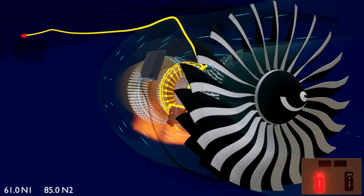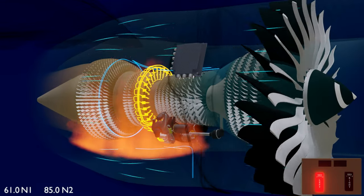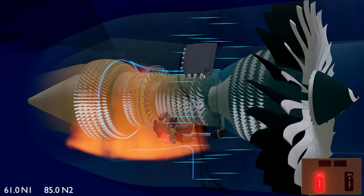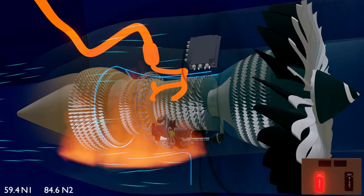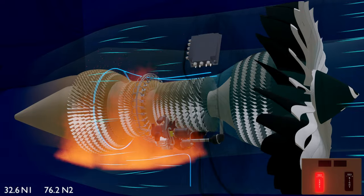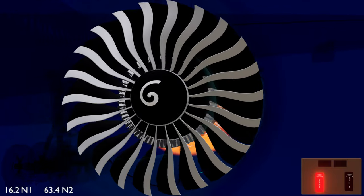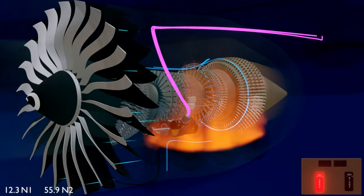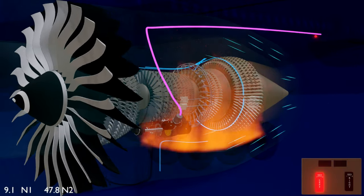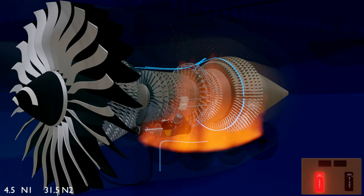Fuel supply to the engine is stopped by closing the engine spar valve and the fuel valves in the hydromechanical unit. The bleed air pressure regulating valve is closed to stop the engine bleed system. Hydraulic supply to the pump is stopped by closing a shutoff valve, and the hydraulic pump is depressurized to stop the output supply.